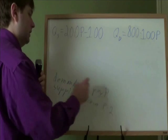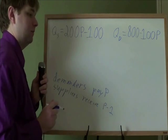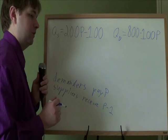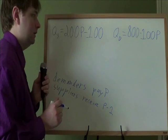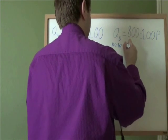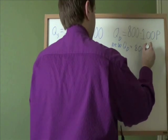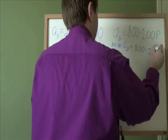So from the demand perspective, nothing has changed. We're still paying P dollars for apples. We don't care how much that money goes to the government or the farmers or anyone else. So our new quantity demanded is the old quantity demanded, 800 minus 100P.